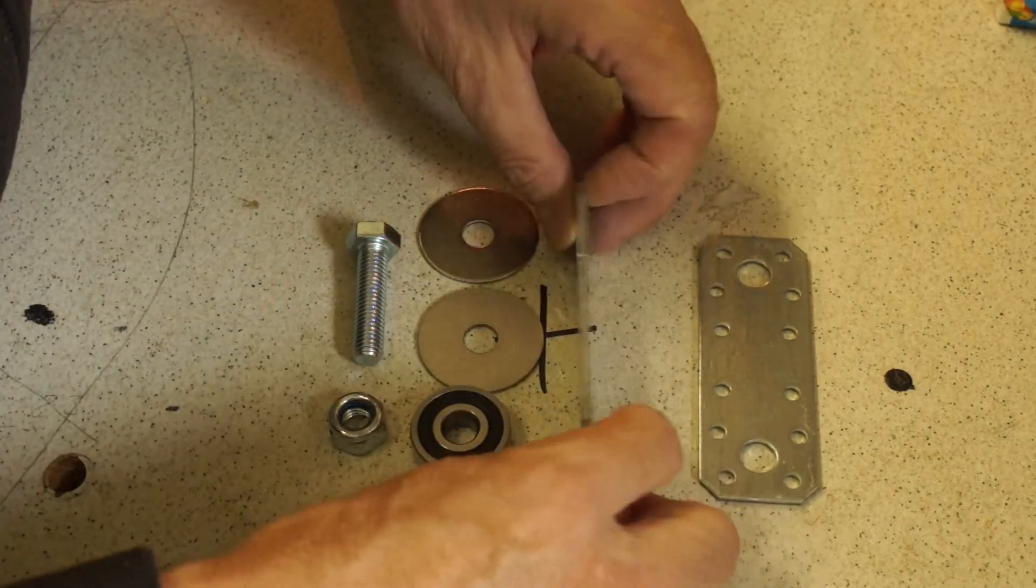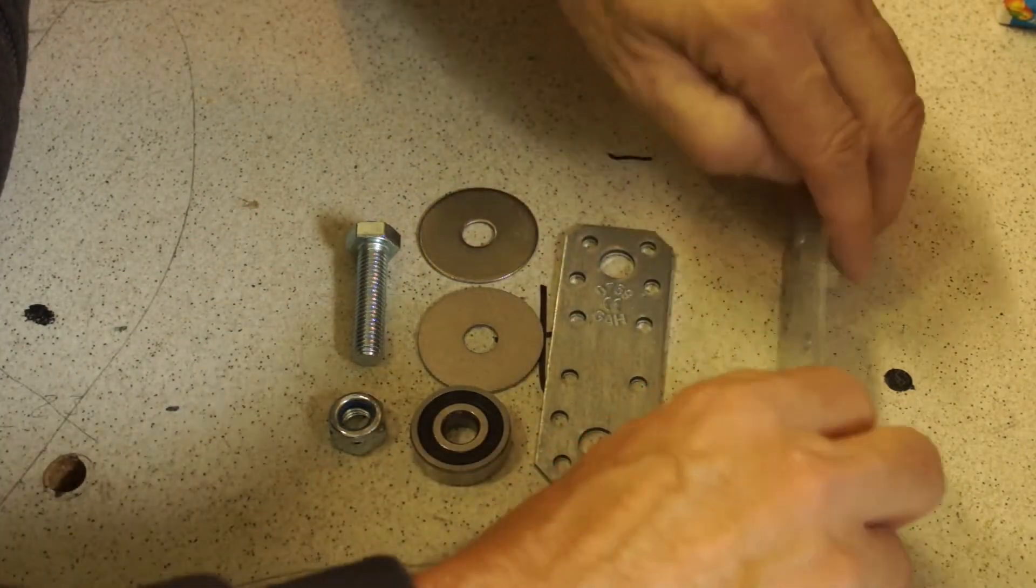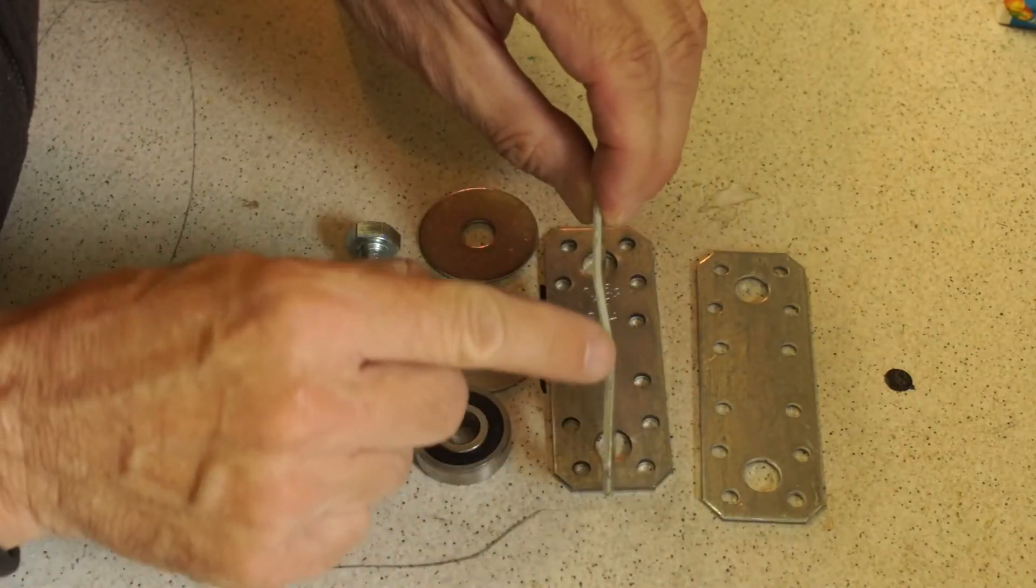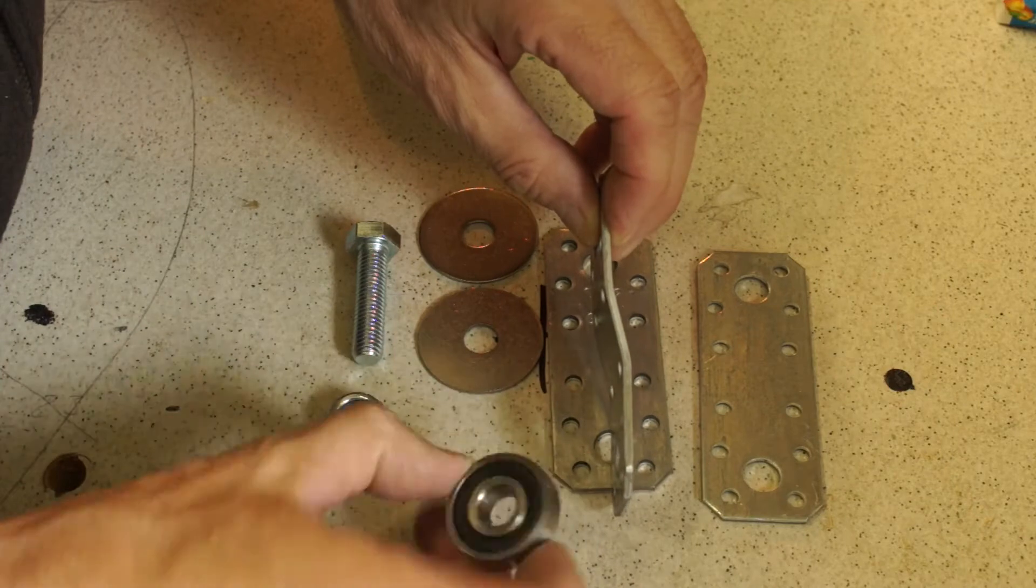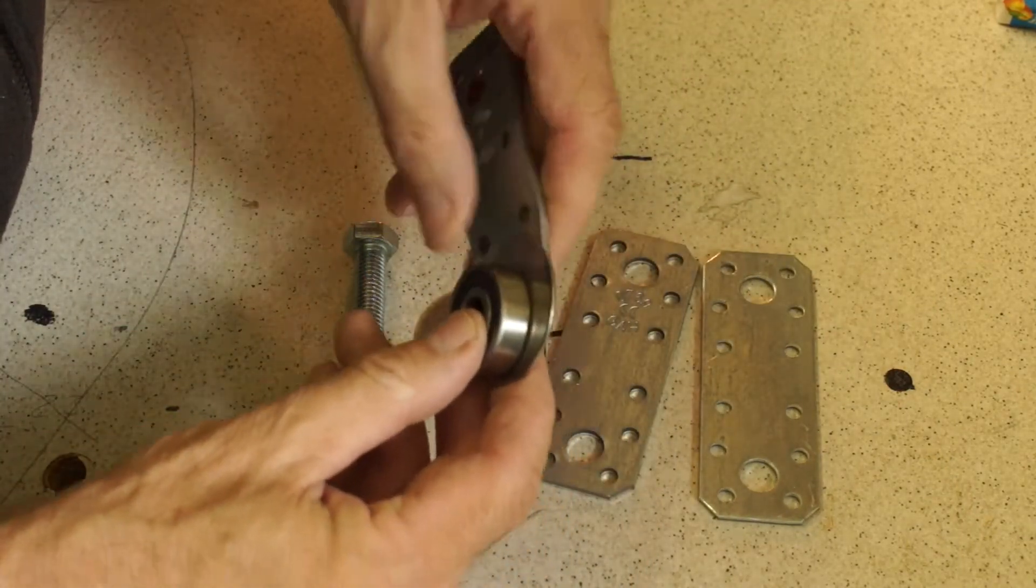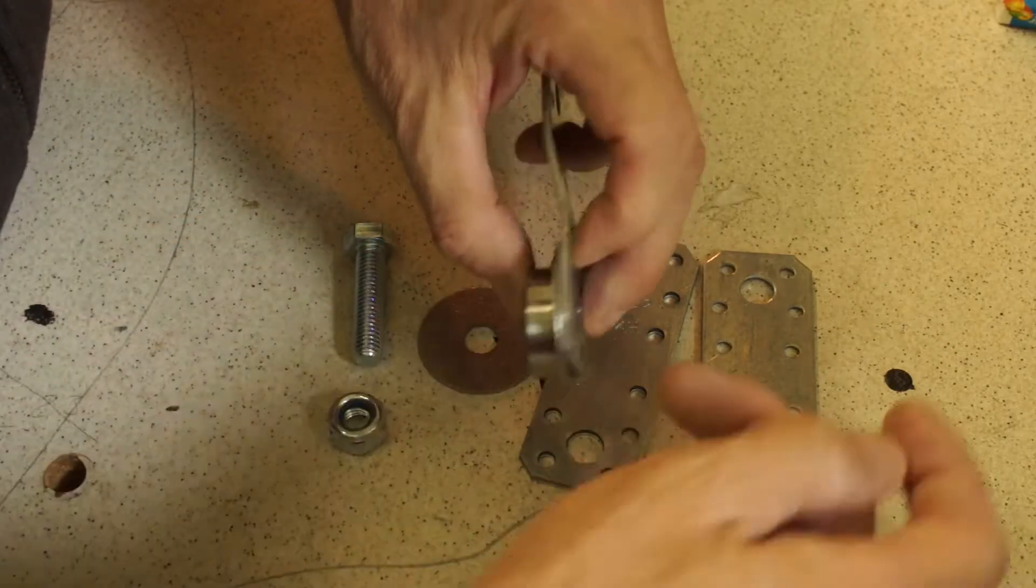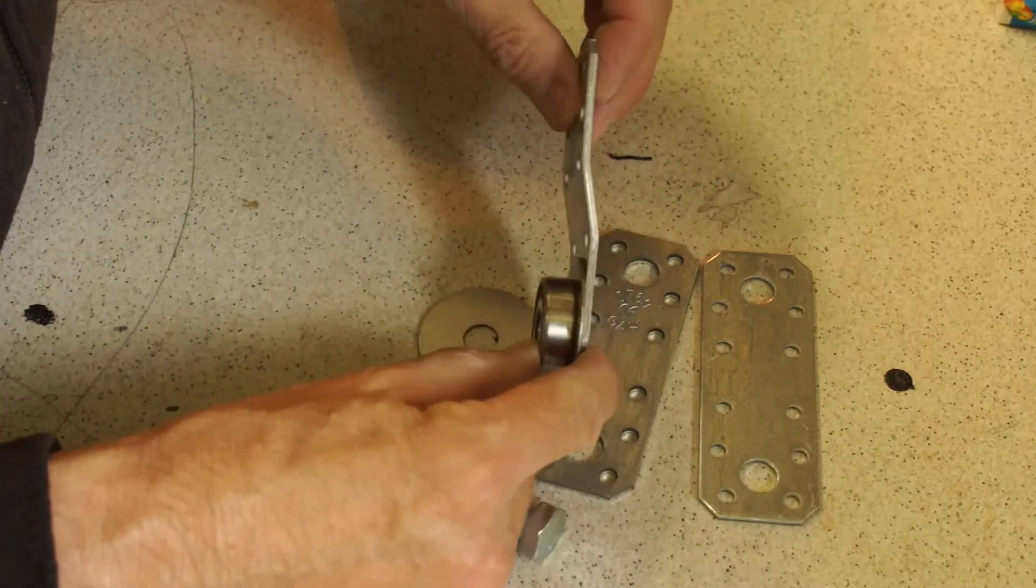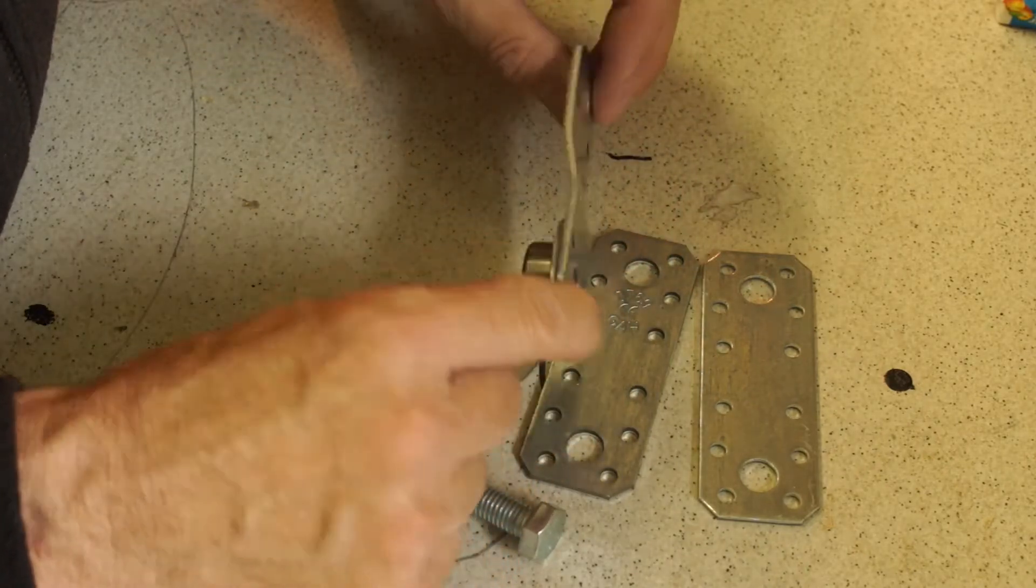What we will do, we will bend this so it forms this shape so we can place the bearing right here. Take the washer, take the bearing, place it right here. Put the screw as an axle through and that's it. Here we are with our rope pulley.